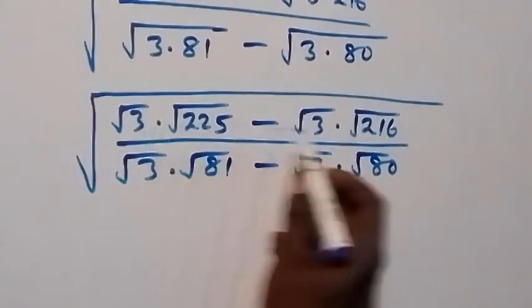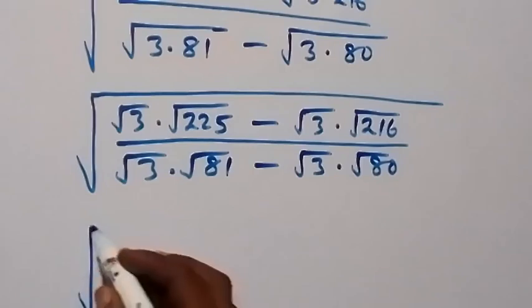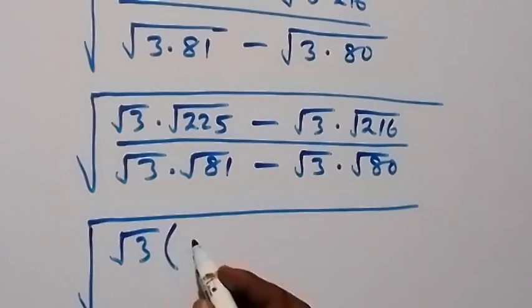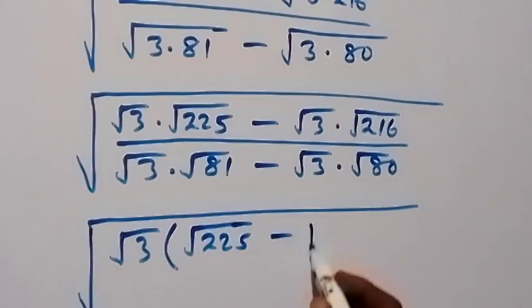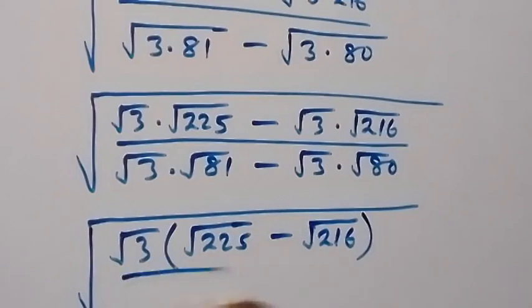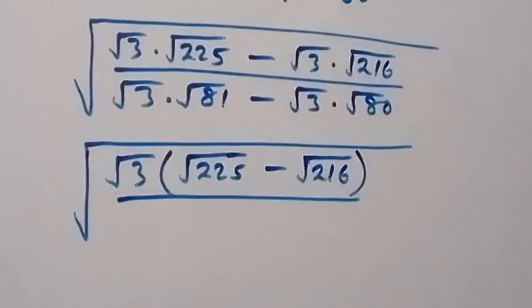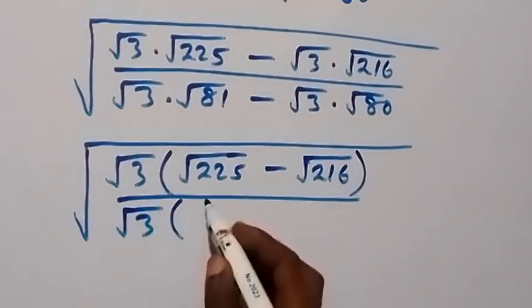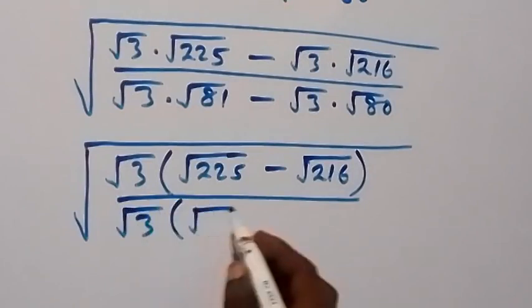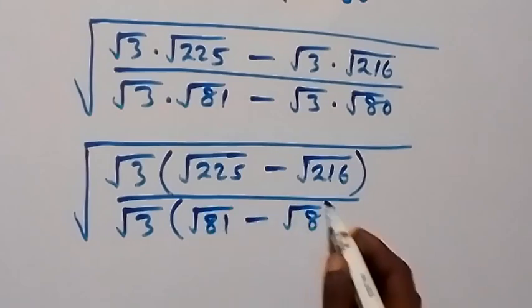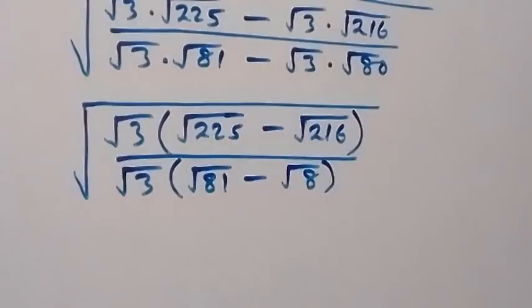What we have here: root 3 can be factored out. Up here this can be written as square root of root 3, then into bracket we have root 225 minus root 216, then divided by root 3, then into bracket we have root 81 minus root 80.